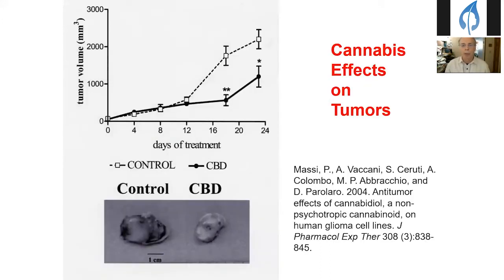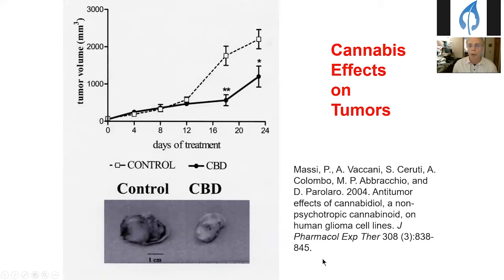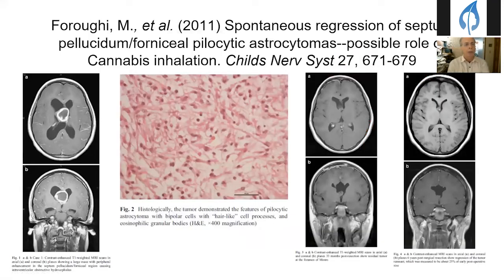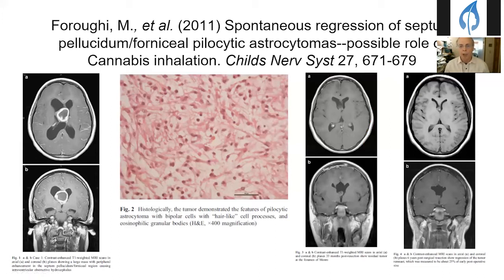In more modern times, this is a demonstration of the application of cannabidiol to a human tumor placed in the hind limb of a rodent. You can see the response after 24 days of treatment, with a marked discrepancy in tumor volume — this is a human glioma cell line exo-planted into the animal. In humans, we have interesting case reports as well. In a study from Canada, two pilocytic astrocytomas showed postoperative residuals that disappeared in both cases after the families allowed their children to smoke cannabis in attempts to eradicate the tumors completely.